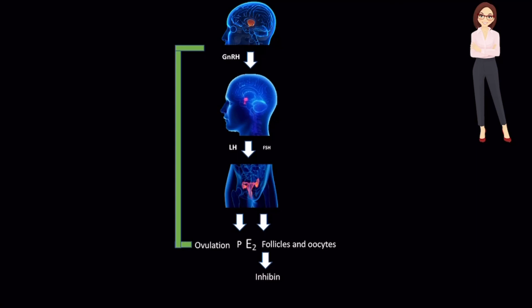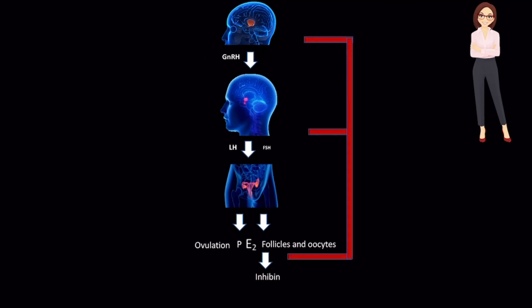Following this, negative feedback loops return, with rising levels of E2, progesterone, and inhibin, all feeding back against the hypothalamus and anterior pituitary gland.